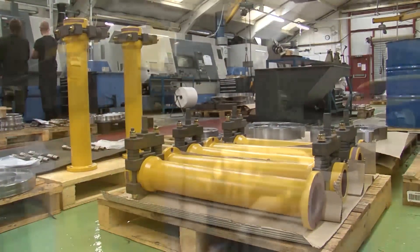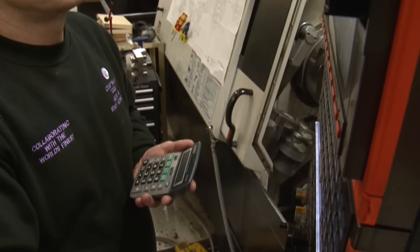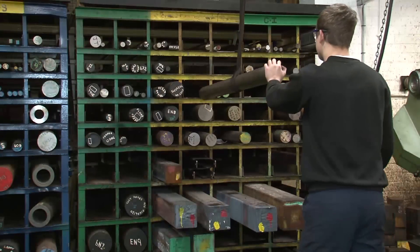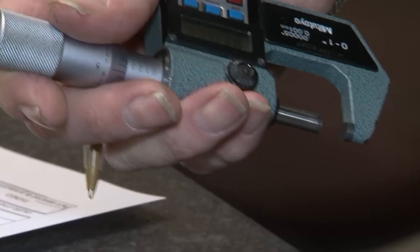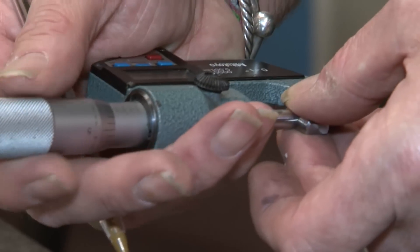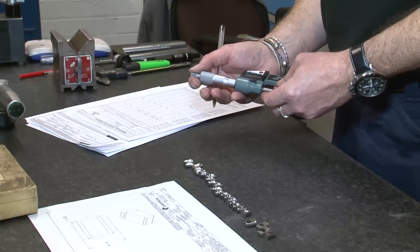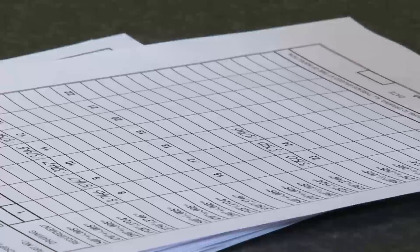From one-off prototypes to large batch production, working with an extensive range of materials including exotic materials such as Inconel, full traceability of materials is provided for each customer's specification, enabling the company to follow different processes for each customer.